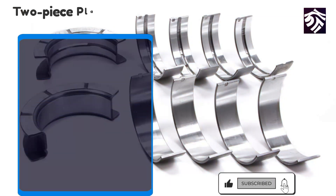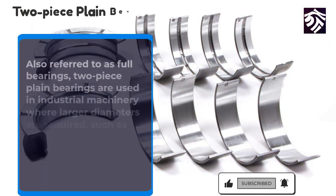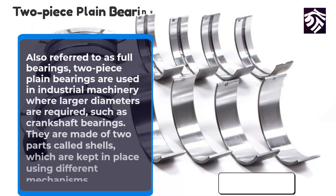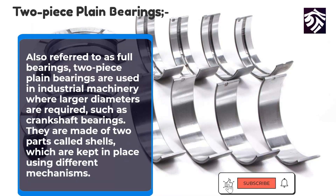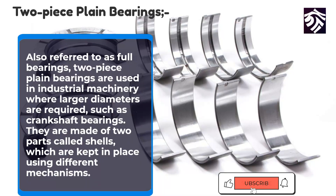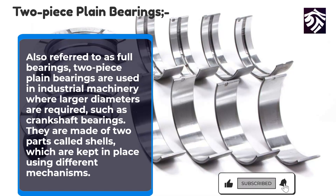Two-piece plane bearings — also referred to as full bearings — are used in industrial machinery where larger diameters are required, such as crankshaft bearings. They are made of two parts called shells, which are kept in place using different mechanisms.